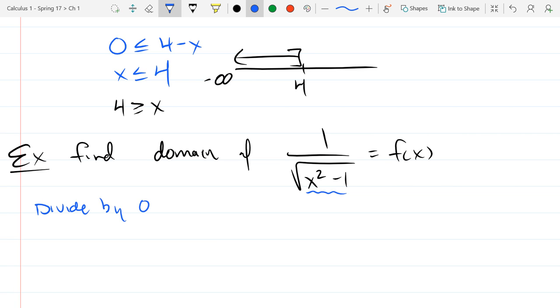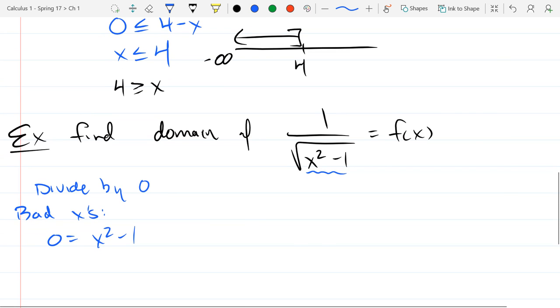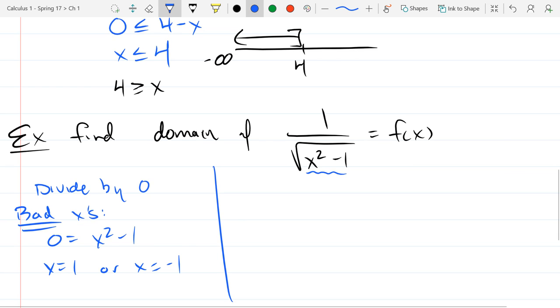So, divide by zero. I'm looking for the bad x's here. So I'm intentionally setting x squared minus 1 to equal zero. And I want to find out what x's are bad here. So I have two solutions. x equals 1 or negative 1. These are bad x's. So I'm not allowed to keep them. So these are the ones we're going to throw out.